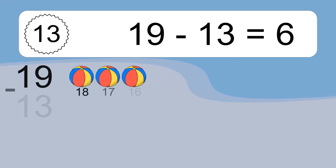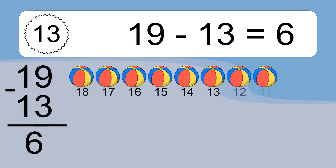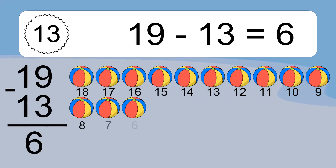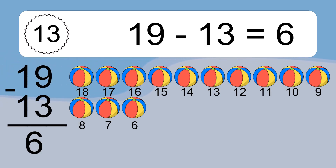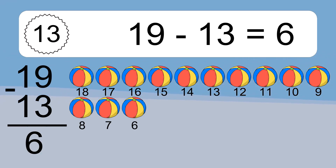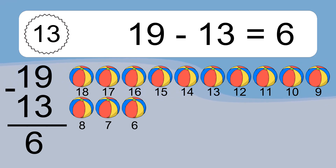Nineteen minus thirteen equals what? Nineteen minus thirteen equals six. Let's count it: 18, 17, 16, 15, 14, 13, 12, 11, 10, 9, 8, 7, 6.